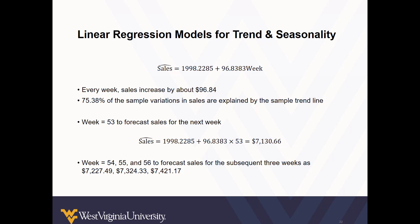The data set covers 52 weeks. So to predict sales in week 53, 53 is multiplied by the coefficient for week and added to the intercept, for an estimate of $7,130.66. The same approach can predict outcomes in weeks 54, 55, 56, and so on.